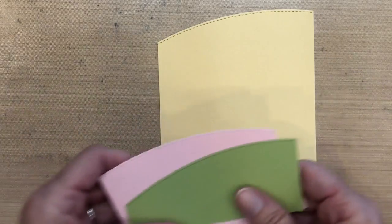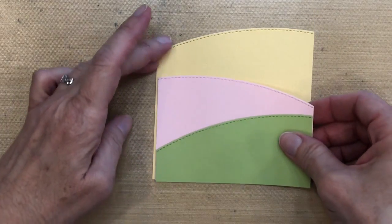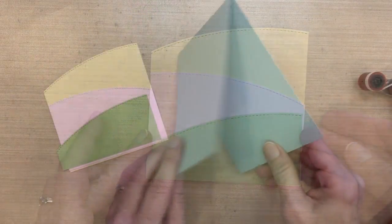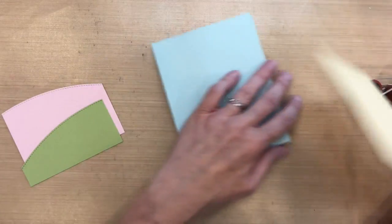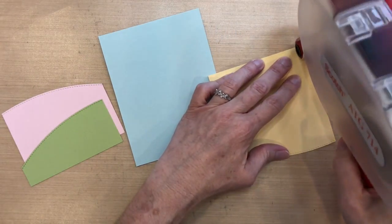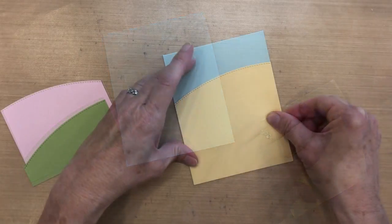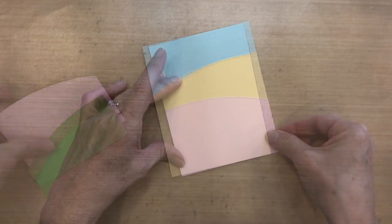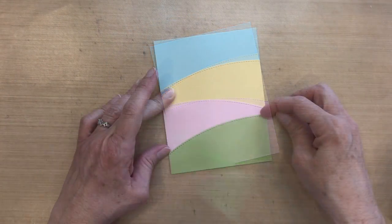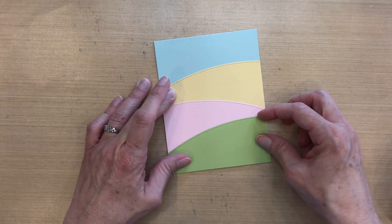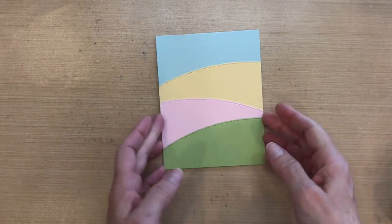So now I have my three layers here. I thought it'd be easy to just layer them on top of one another rather than trying to fit them together like a puzzle. So I'm going to put ATG on the yellow and put that on my card base, then I'll put the pink on, and then I'll put the green on. So my bunnies are going to be peeking over each one of these hills.